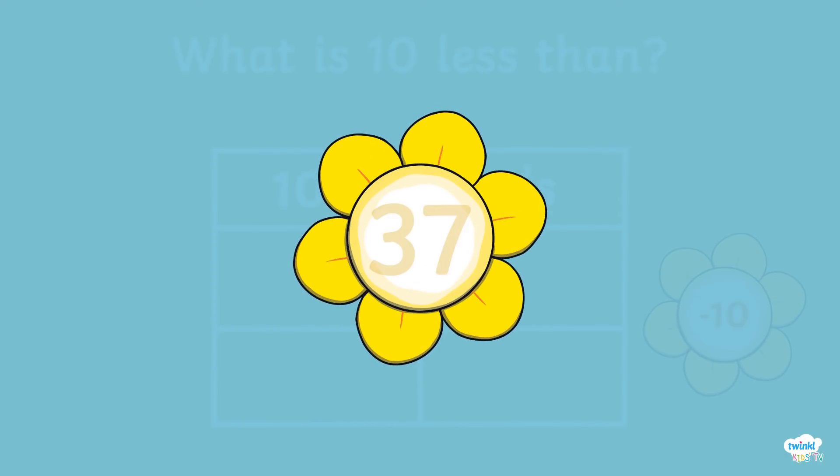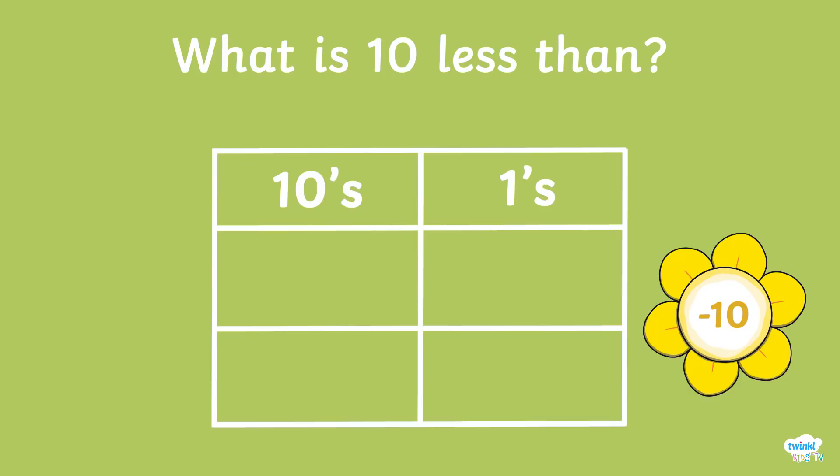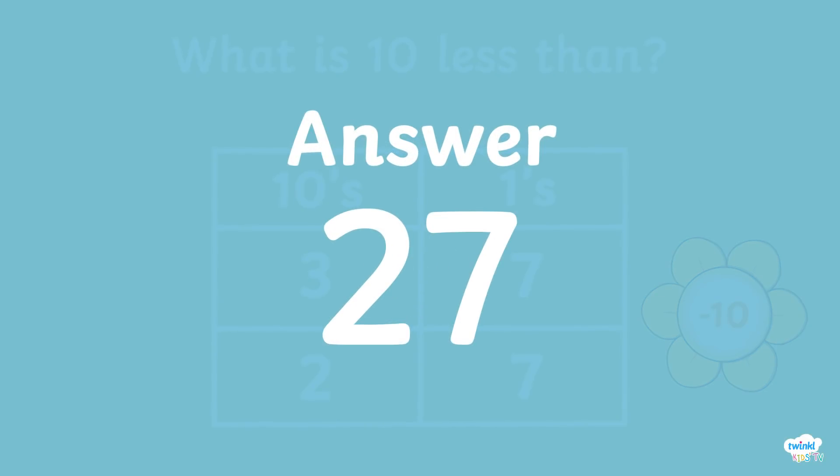Shall we try another number? What about 37? Place the 3 and 7 into their correct columns. Minus 10, so the 7 remains the same and the 3, representing 30, will turn to 2. That means that 10 less than 37 is 27.